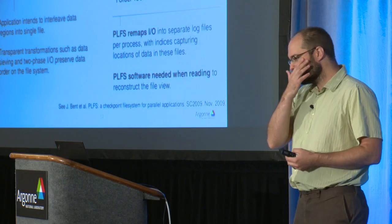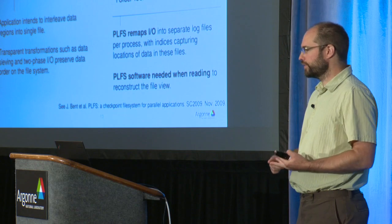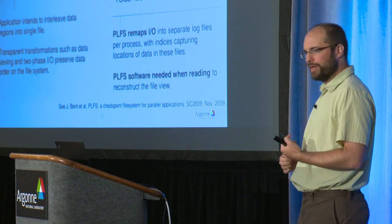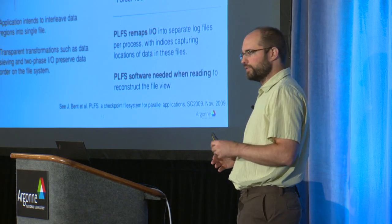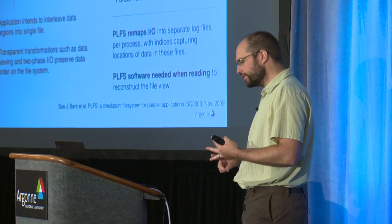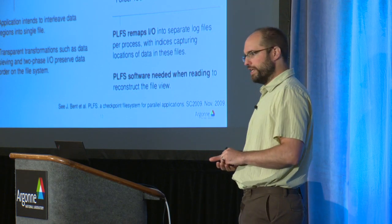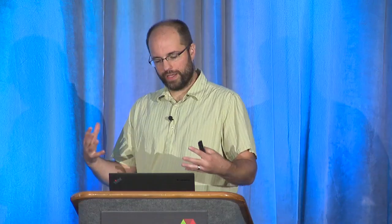The observation was that in many cases the read workload is not so different from the write workload — when you restore a checkpoint from a hundred processes, the zeroth process reads the zeroth process checkpoint, so you don't often have to do a full replay. However, a couple of problems: you're creating one file per process, so at some point you have a metadata problem that gets worse as you scale to tens of thousands of nodes. Second, if you have a very different read workload, you have to run over this new file system organization and reconstruct the data.